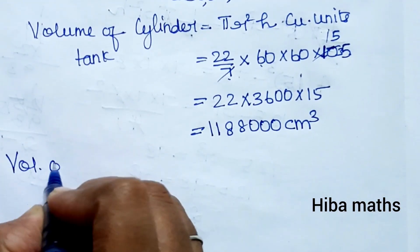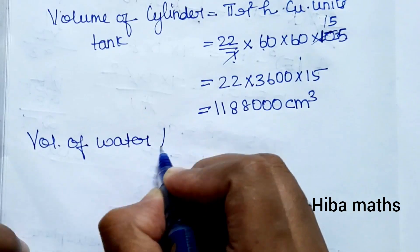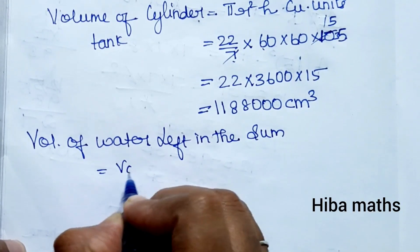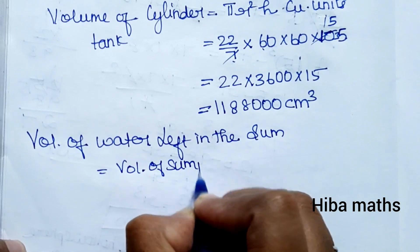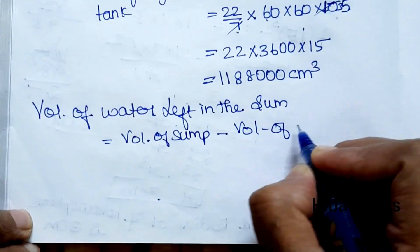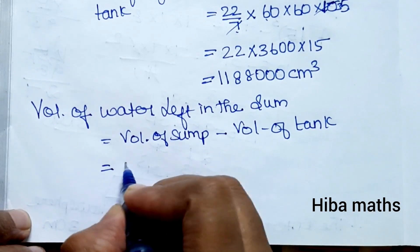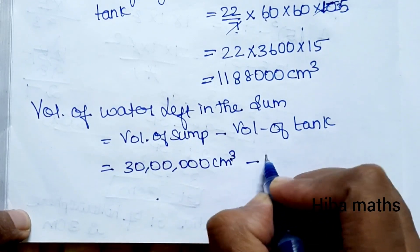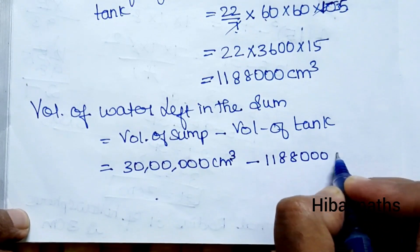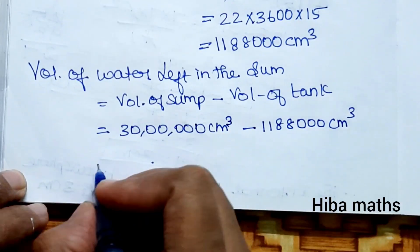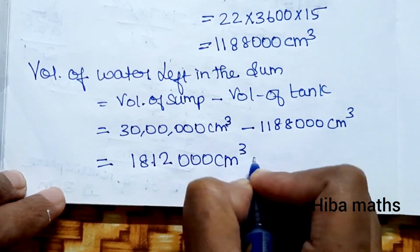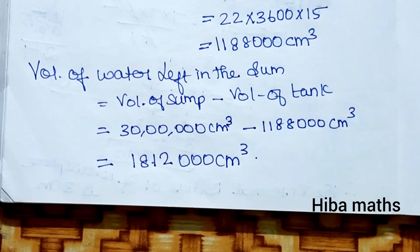The main question is the volume of water left in the sump. Volume of sump minus volume of overhead tank = 30,00,000 cm³ minus 11,88,000 cm³ = 18,12,000 cm³. This subtraction is straightforward — you can try it in the comment section. Thank you so much for watching.